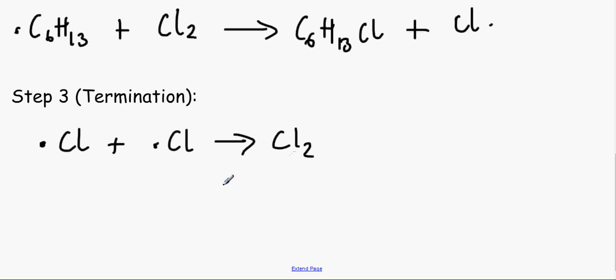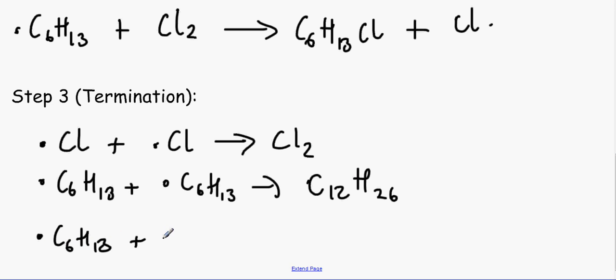The second one is if we have C6H13 radical plus C6H13 radical to make C12H26, which is an alkane because of its CnH2n plus 2. Or we can react C6H13 radical plus Cl radical to make C6H13Cl. And that is definitely it for reactions of alkanes.